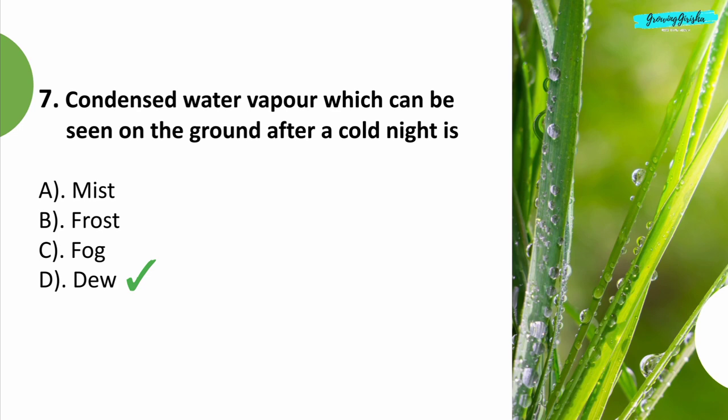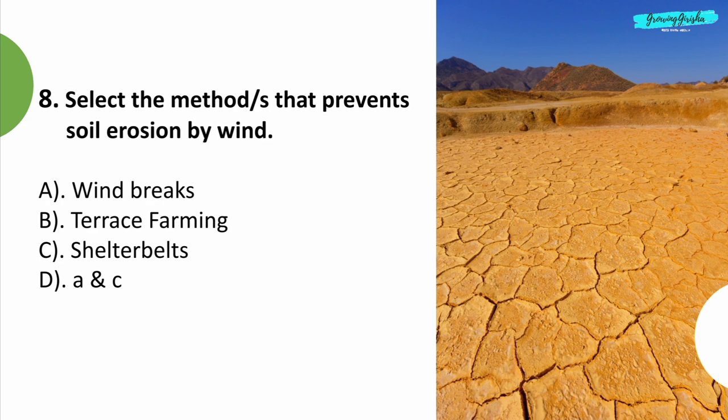Question 8: Select the methods that prevent soil erosion by wind. Option D: Both A and C.